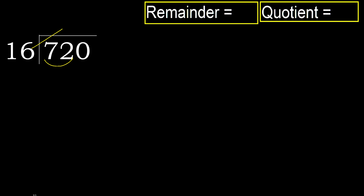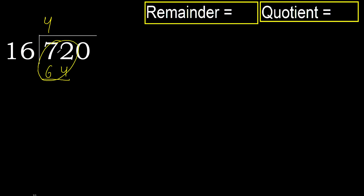16 multiplied by 5 is greater. Multiplied by 4 is 64, is not greater. OK, subtract — 8.